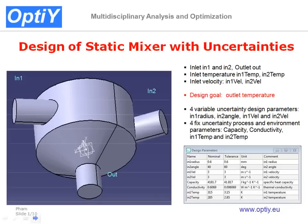This is a demonstration using the OptiWire software for the design of the static mixer with uncertainties. The static mixer consists of two inlet pipes, inlet one and inlet two, delivering water into the mixing vessel, and the water exits through the outlet pipe out.